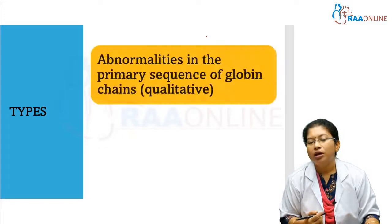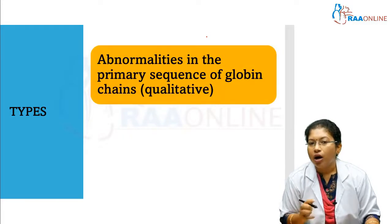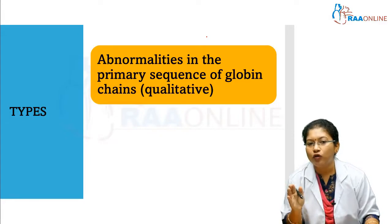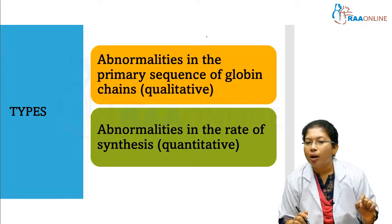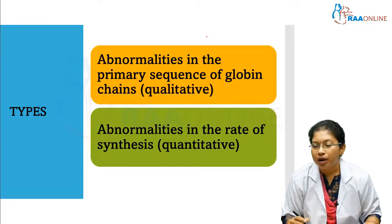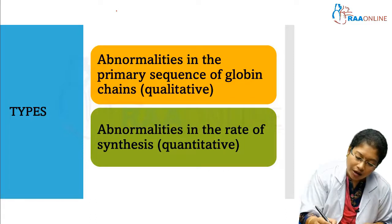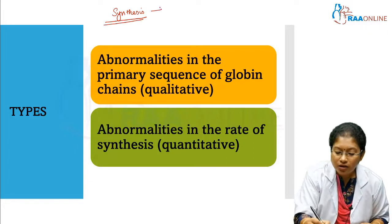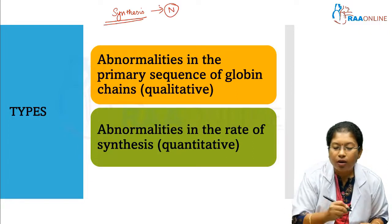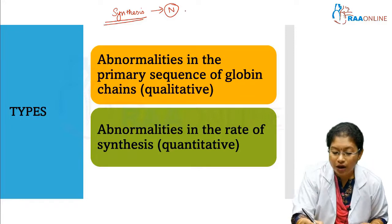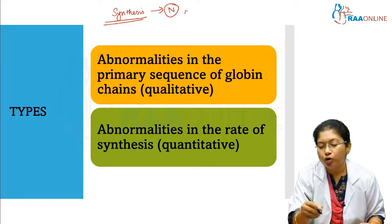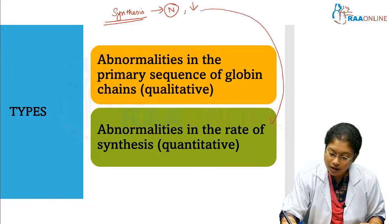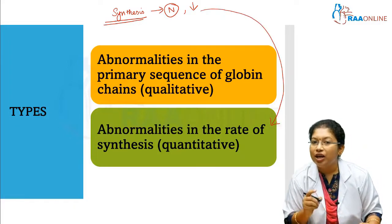What are the types of hemoglobinopathies? They are produced due to abnormalities in the primary sequence of globin chains. Second, abnormalities in the rate of synthesis. That means one is a defect in synthesis where the amount of hemoglobin produced is reduced — we call it quantitative hemoglobinopathy.